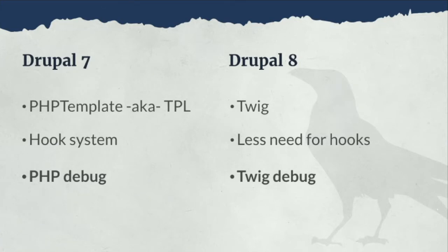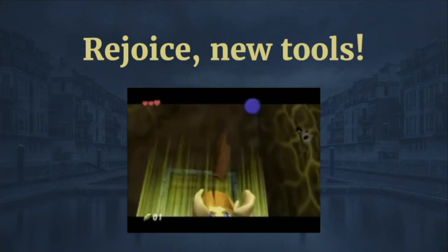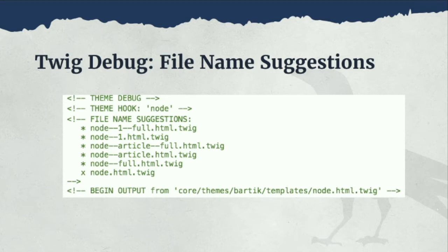Drupal 7 had the luxury of debugging right in the template files. Drupal 8, not so much at first. But now we've got more tools. One of these new tools is file name suggestions. It takes a little bit of configuration — namely setting your twig.config debug setting to true. Once that's done, clear the cache and refresh your page. When you inspect the element, you have access to these lovely file name suggestions.